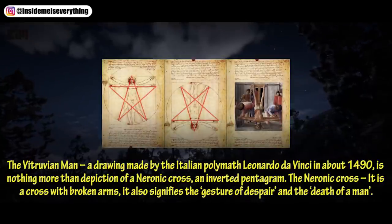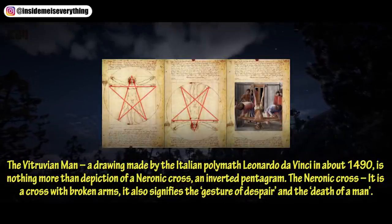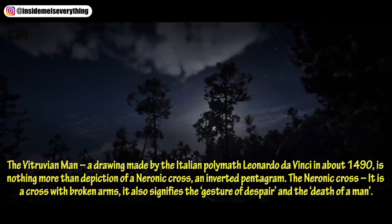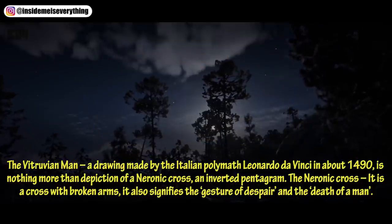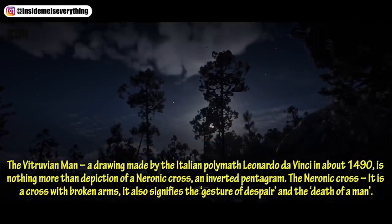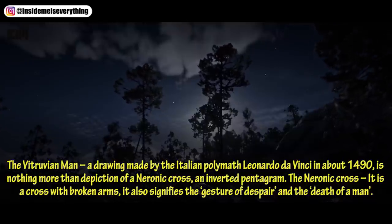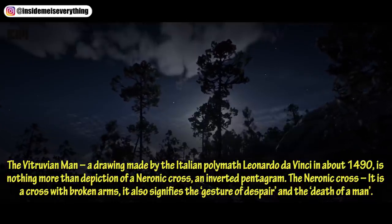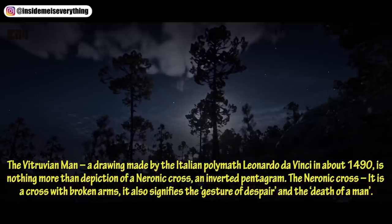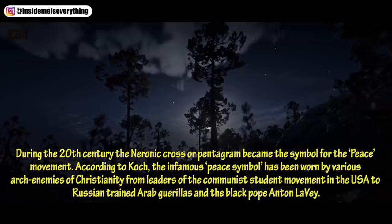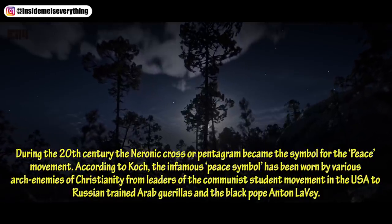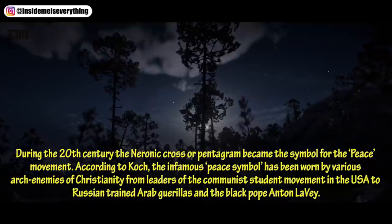The Vitruvian Man, a drawing made by the Italian polymath Leonardo da Vinci in about 1490, is described here as nothing more than a depiction of the Neuronic cross — an inverted pentagram. The Neuronic cross is a cross with broken arms; it also signifies the gesture of despair and the death of a man. During the 20th century, the Neuronic cross or pentagram became the symbol for the peace movement.